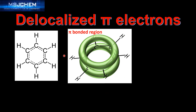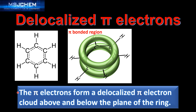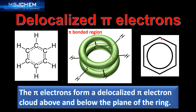Next we look at the delocalized pi electrons in the benzene molecule. The pi electrons in benzene form a delocalized pi electron cloud above and below the plane of the ring. The delocalized pi electrons occupy the pi bonded region above and below the plane of the molecule. The circle in the middle of the hexagon representation of benzene represents these delocalized pi electrons.